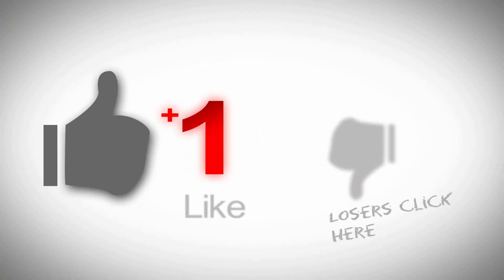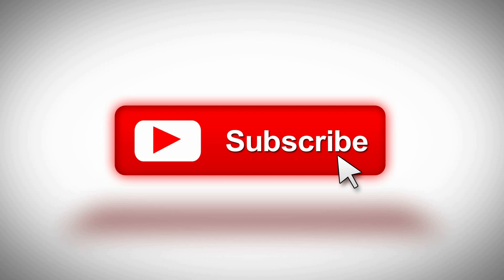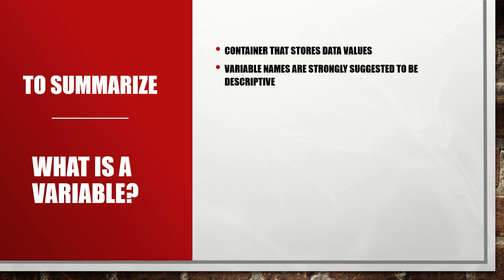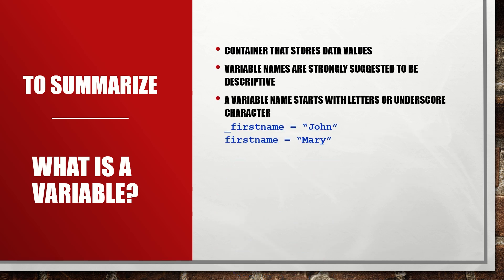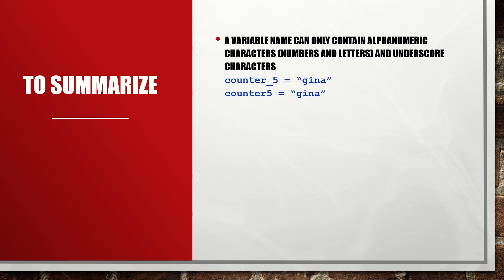Hello again, welcome back to my channel. In this video we will summarize what we have learned about variables. A variable is a container that stores data values. Variable names are strongly suggested to be descriptive, and a variable name starts with letters or an underscore character. Variable names cannot start with a number.